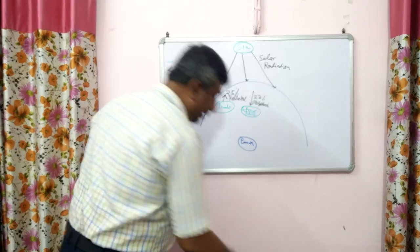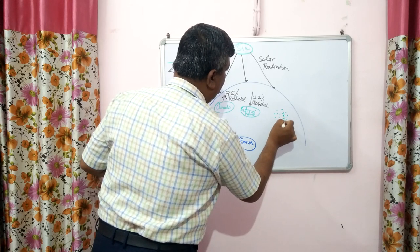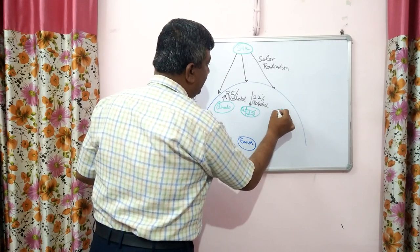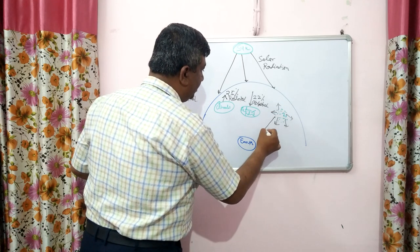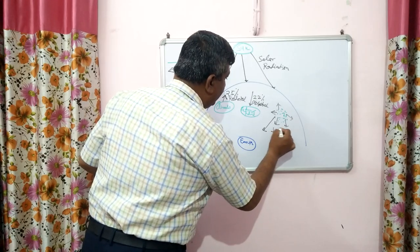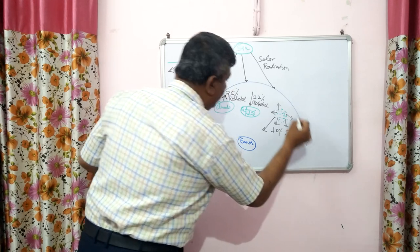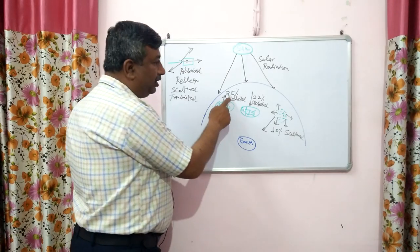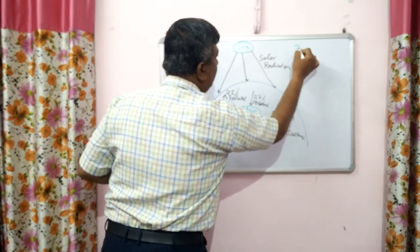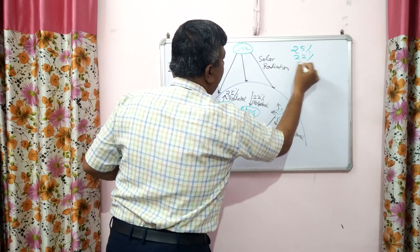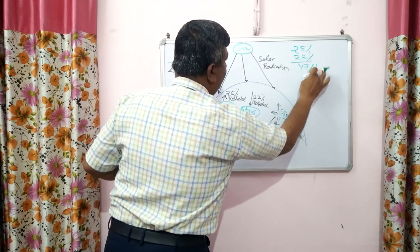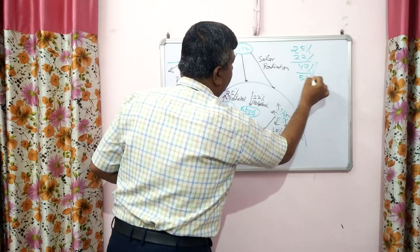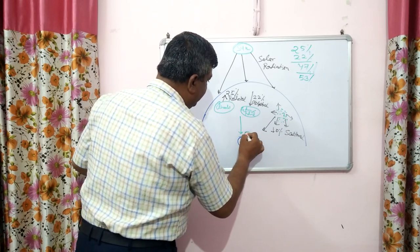Some small particles — dust particles and pollutants — cause scattering, and scattering may occur in any direction. Towards the earth, scattered radiation is about 10%. So 25% is reflected by clouds, 22% absorbed by the atmosphere and gases — together about 47% radiation is either reflected or retained in the atmosphere. The remaining 53%, including scattered radiation, reaches the earth's surface.